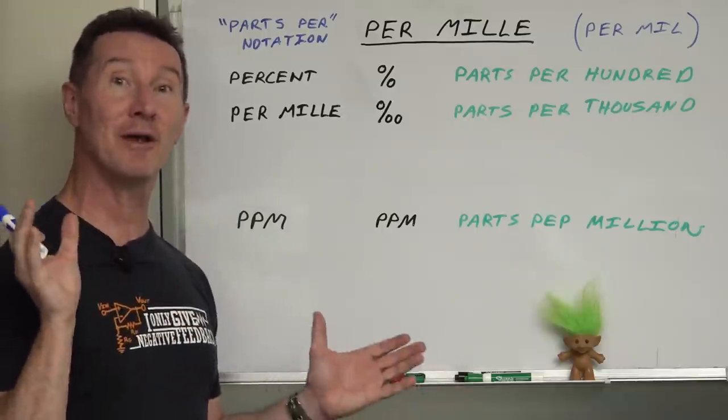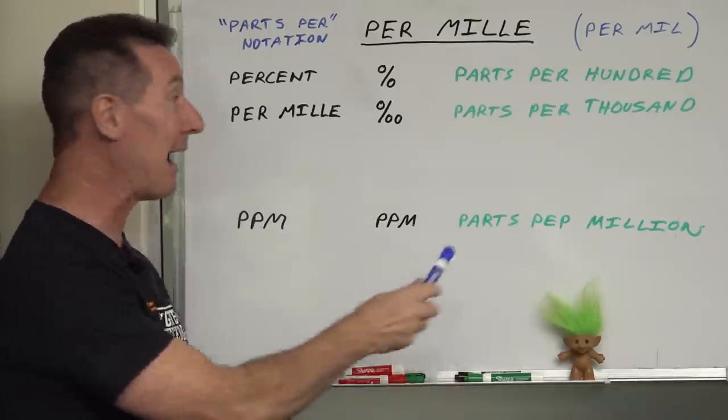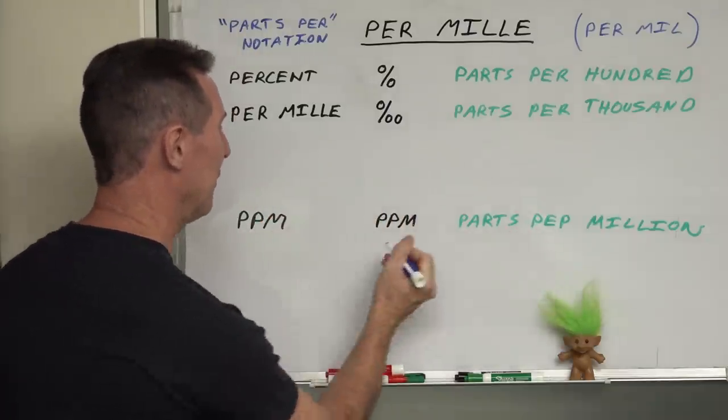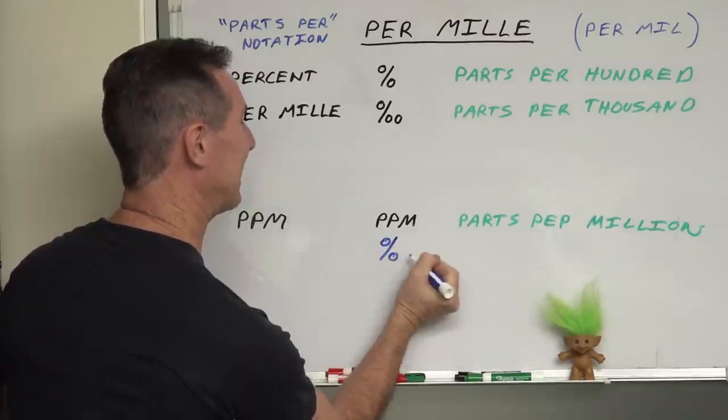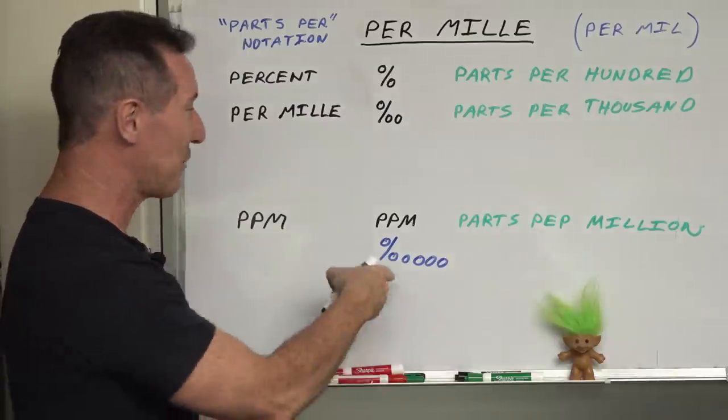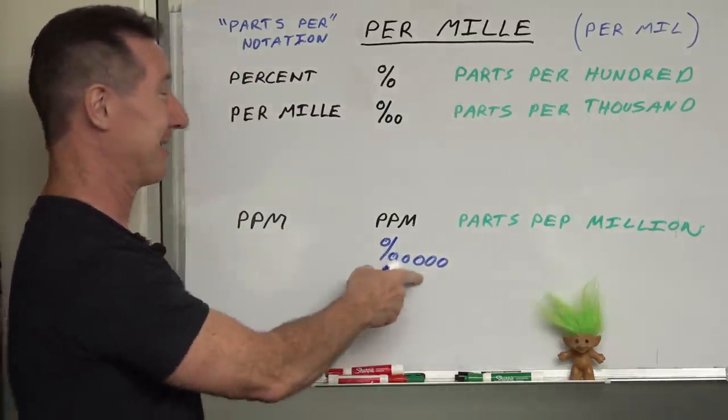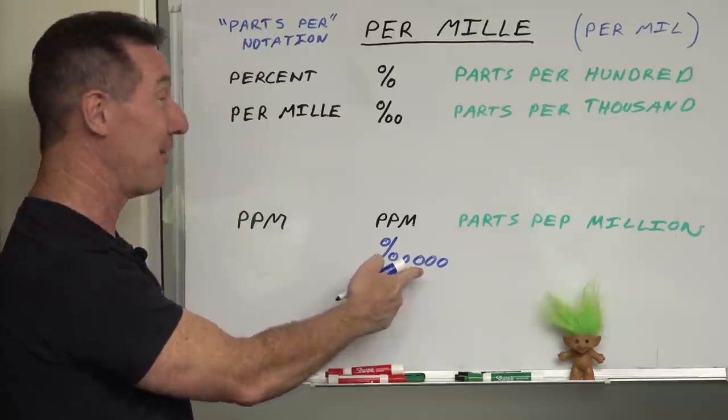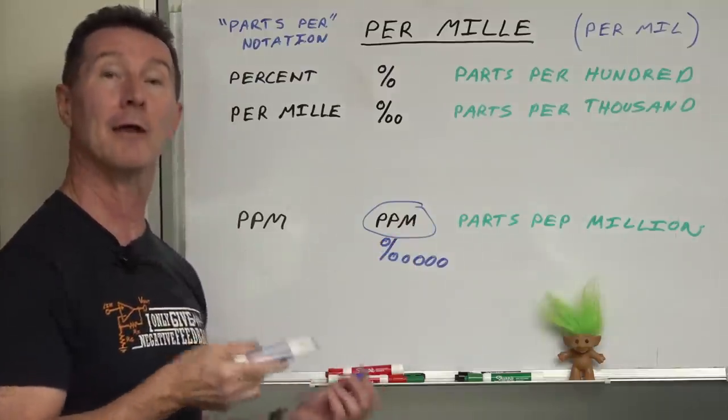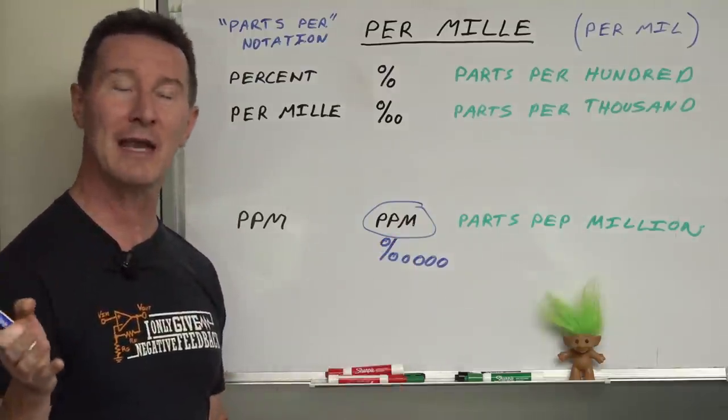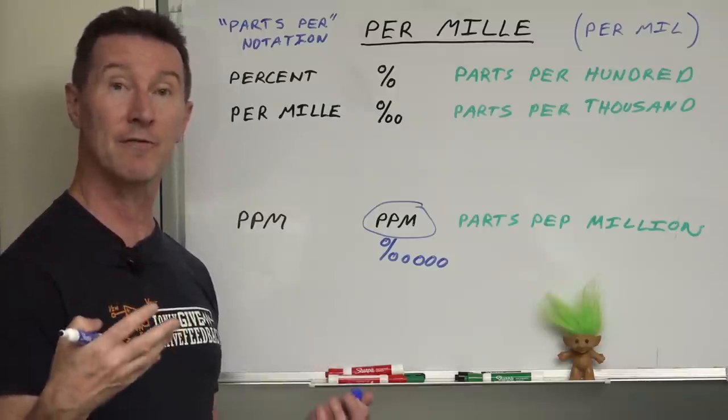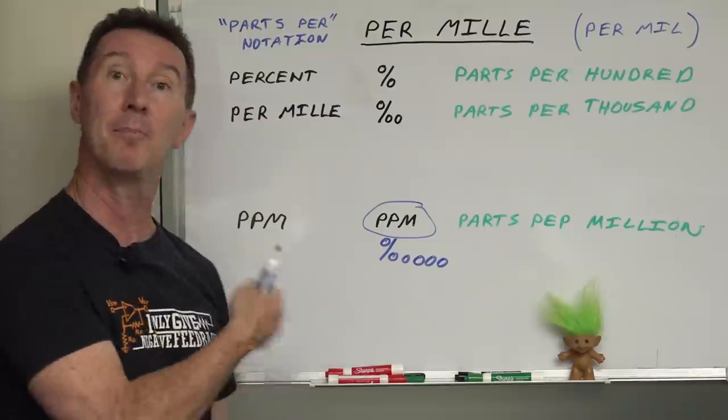So where else have you heard of this parts per notation? Well, in engineering electronics, you've almost certainly seen PPM or parts per million. It's another per notation. And you could in theory, I guess, write it with an extra three O's on the end of that, so four O's. That'd be, but I've never seen that. Leave it in the comments down below if you've ever seen that. It's simply, people just write it as PPM, like that, parts per million.